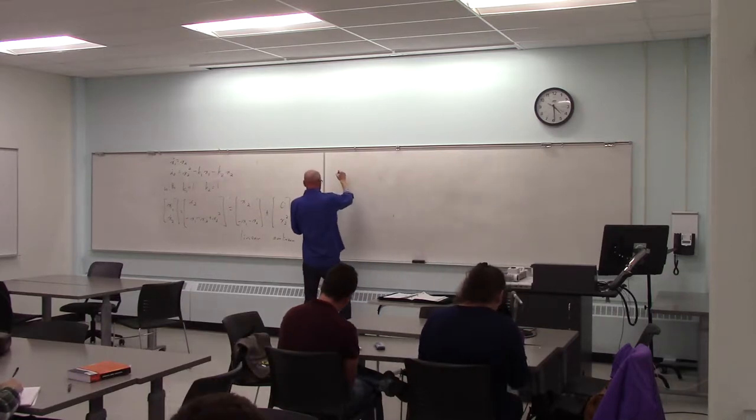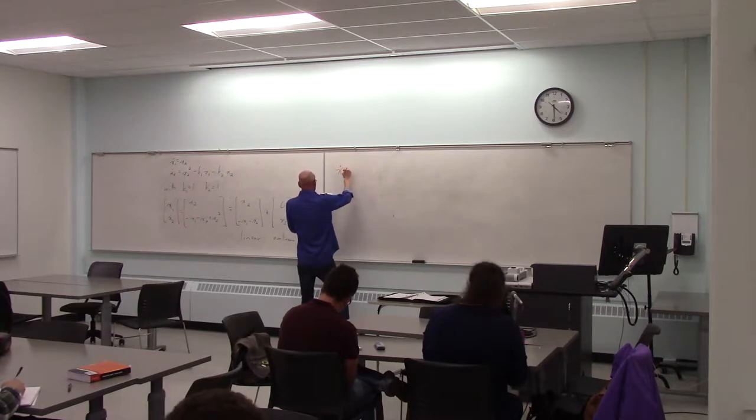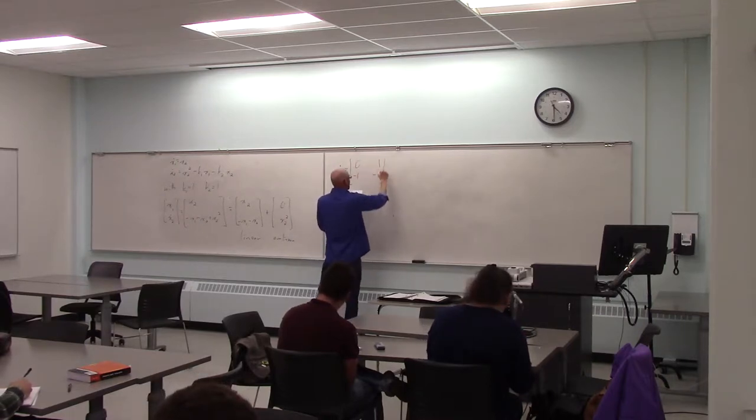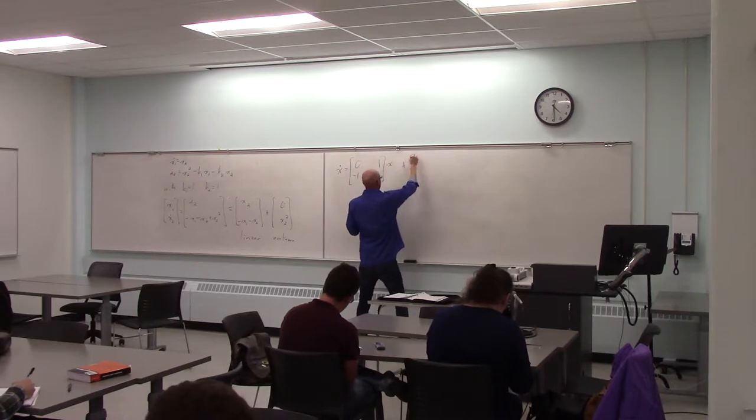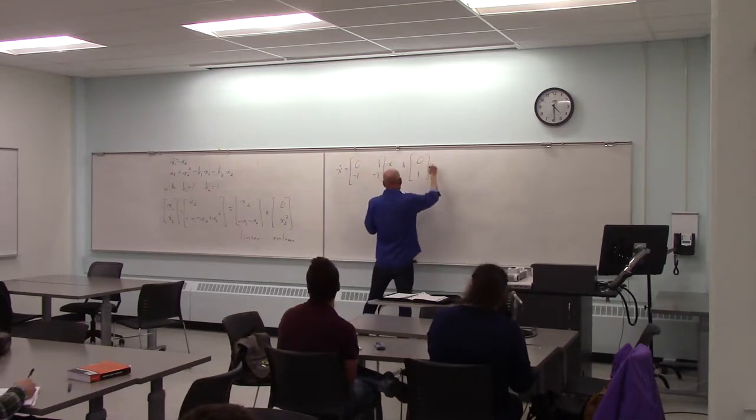So I have x1, x dot equals 0, 1, negative 1, negative 1 times x plus 0, 1 times x squared, x2 squared.